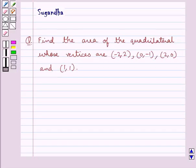Hello and welcome to the session. In this session we discuss the following question which says: Find the area of the quadrilateral whose vertices are (-2, 2), (0, -1), (2, 0), and (1, 1).